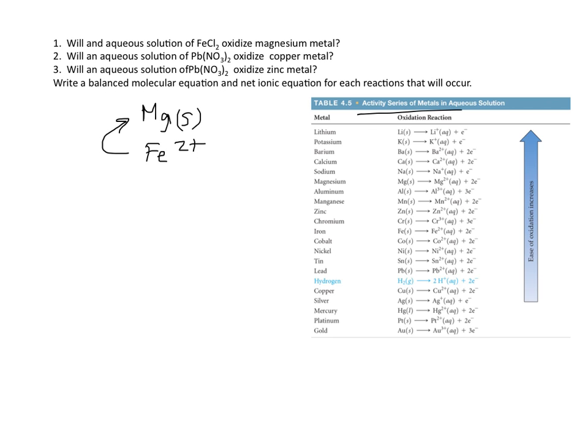So what do we do? We go to our activity series chart, as you see here, and we first find our metal. So magnesium is our metal. And then what we do is we find the substance that's in its ionic form. So iron is the ion.